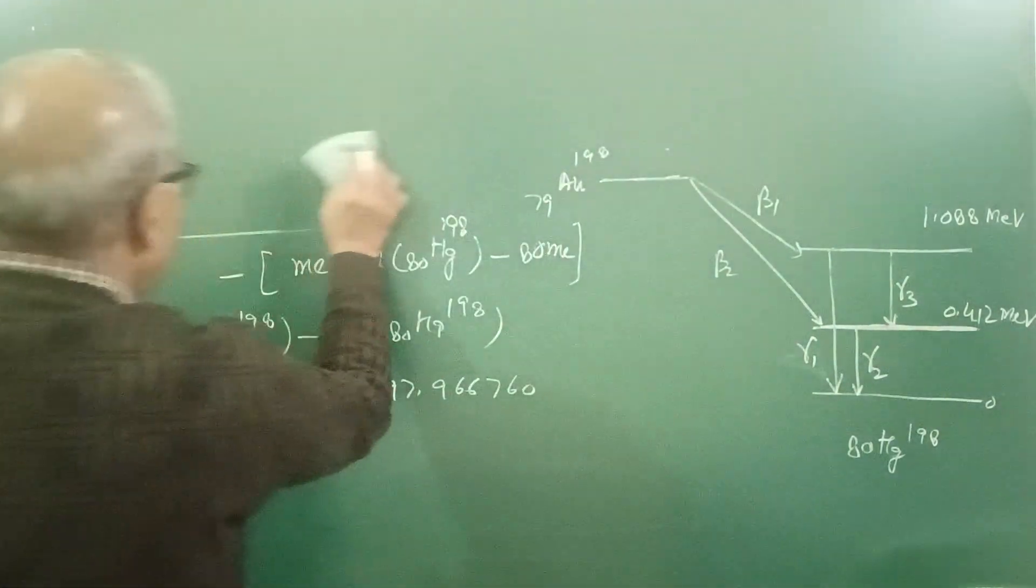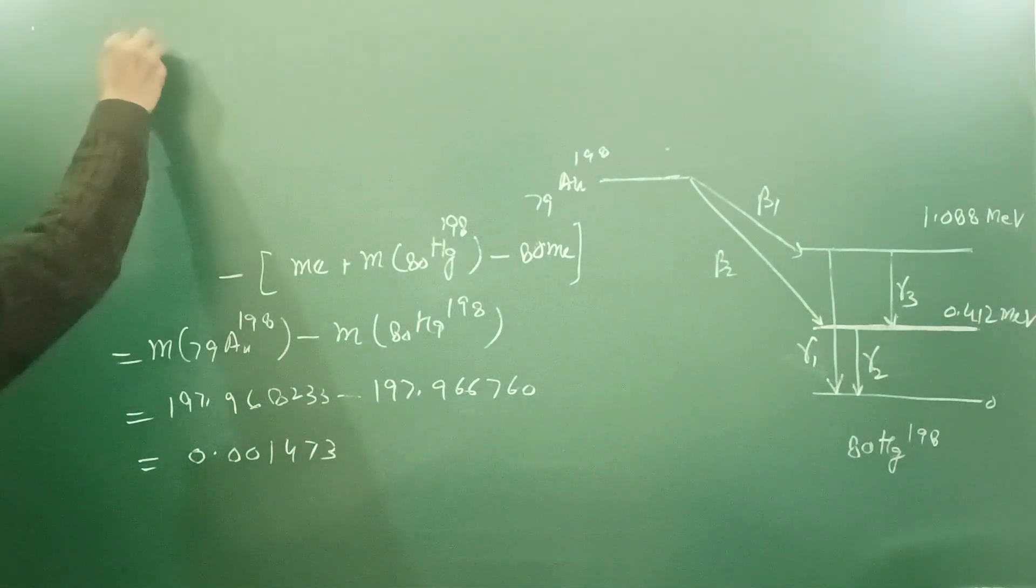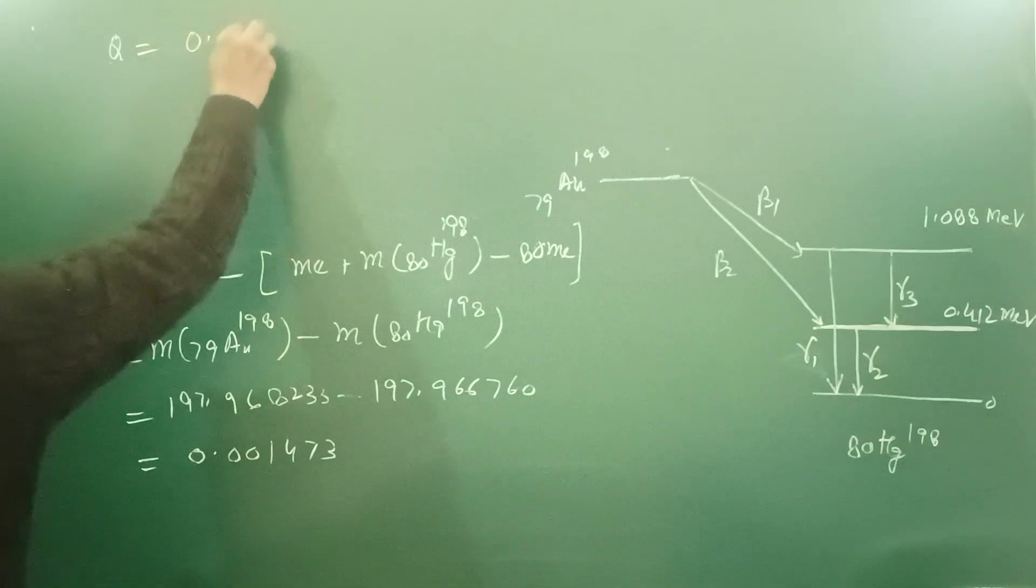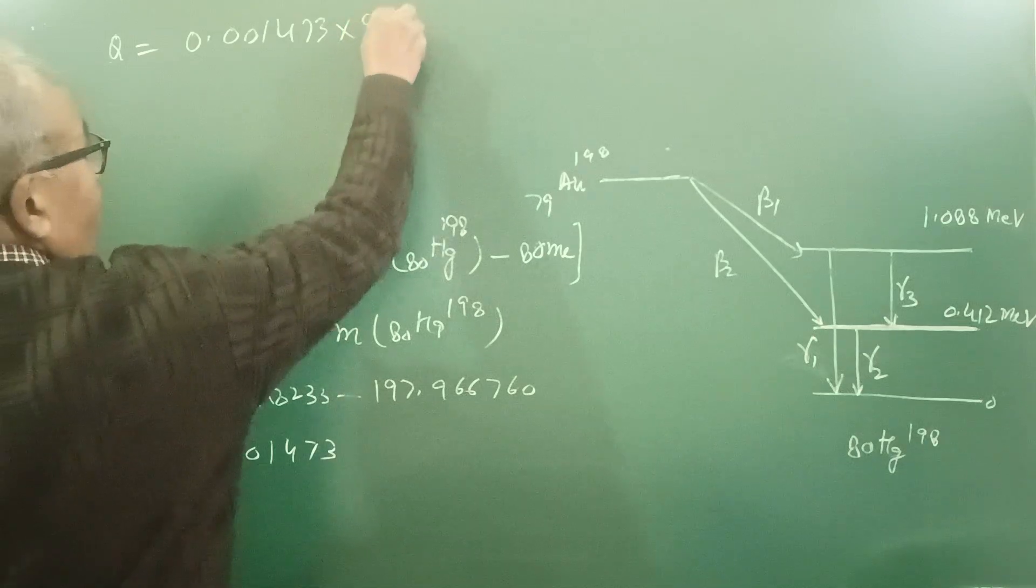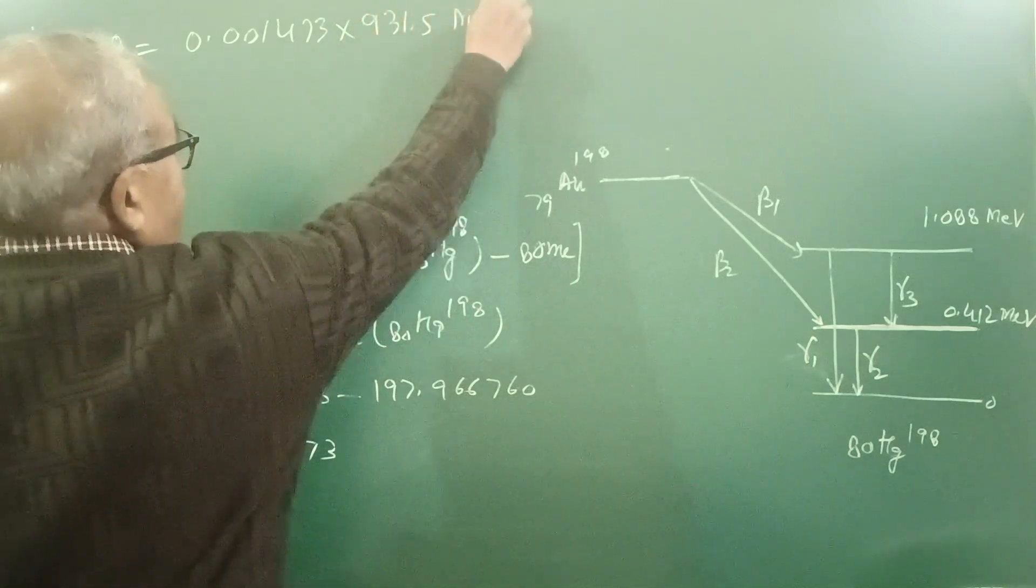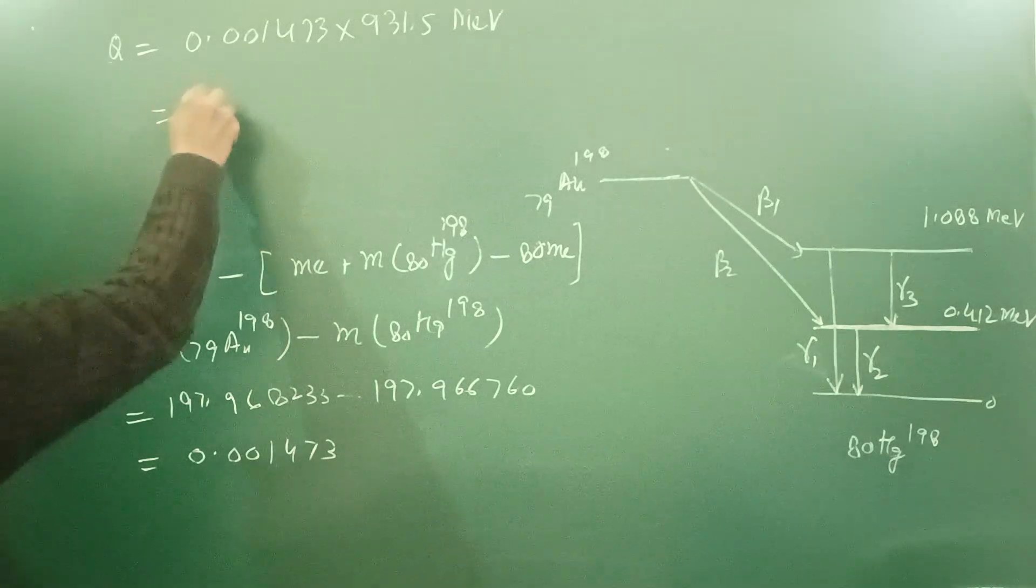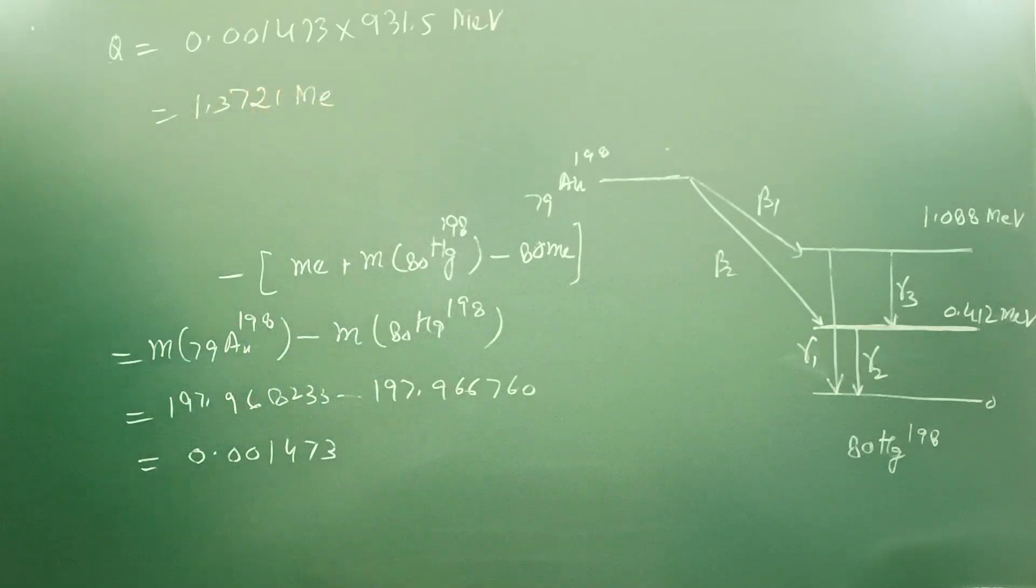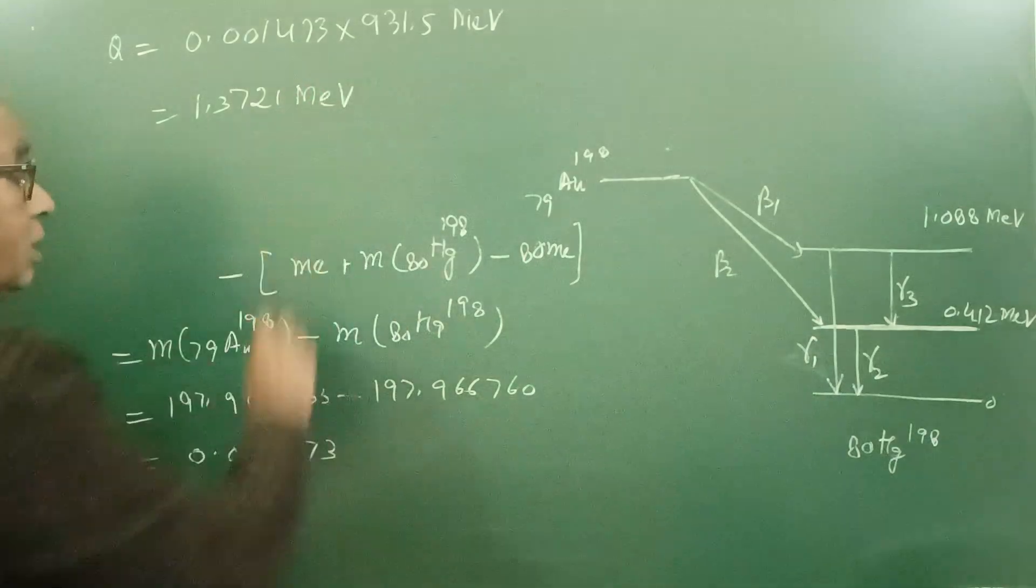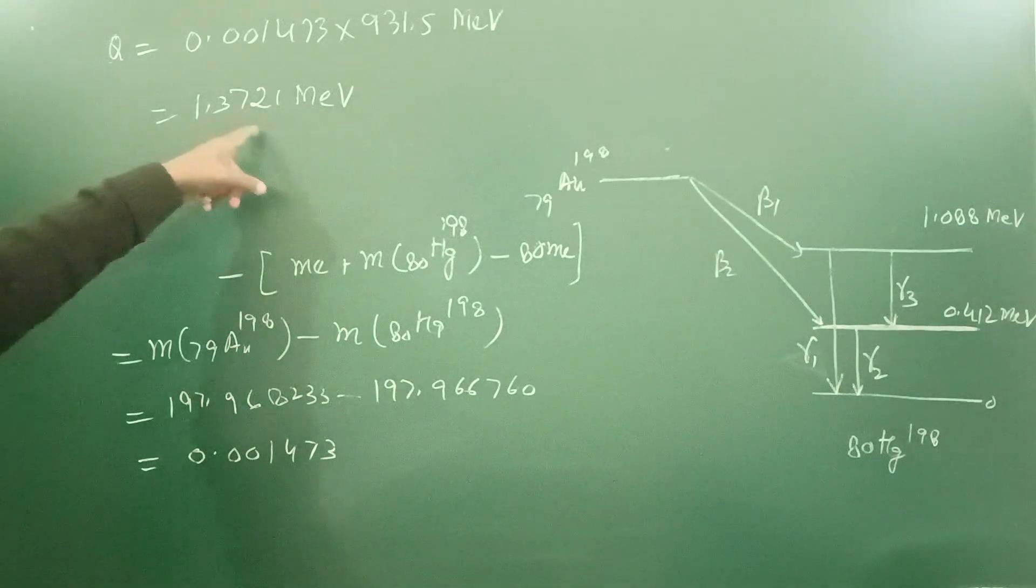So amount of energy released, Q, is the mass defect times c squared, and this comes out to be equal to 1.3721 MeV. The energy released by the decay of gold into mercury releases this much energy.